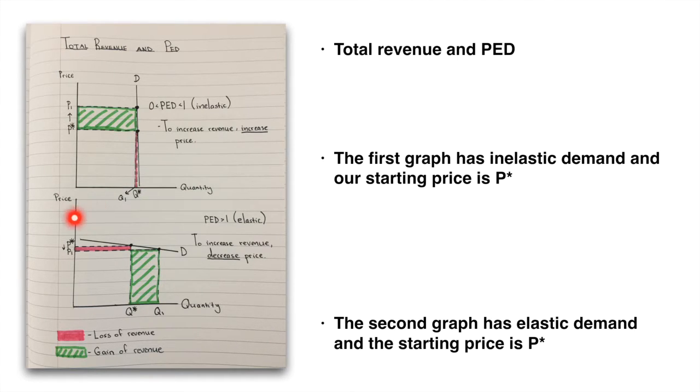Let's now do the same thing with an elastic demand curve. If we start with our price of P star, we go across to the demand curve and drop down. Our total revenue is P star, Q star.